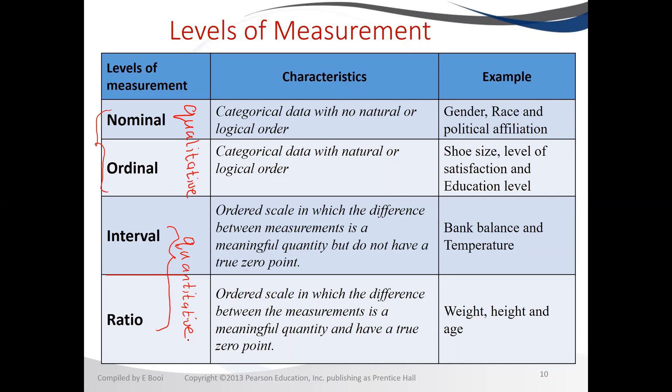Interval data comes from quantitative data, so it is numerical data — data that you can count or measure. With interval data, it is an ordered scale where you can start from zero, one, or even minus one. You are able to calculate the difference between numbers, but there is no true meaning of zero — zero is just another number.